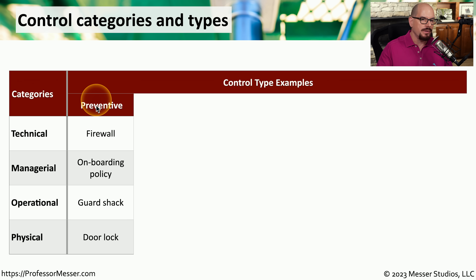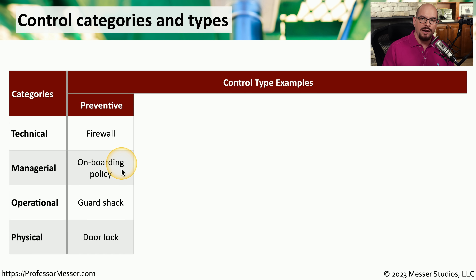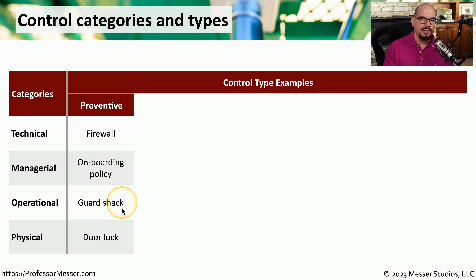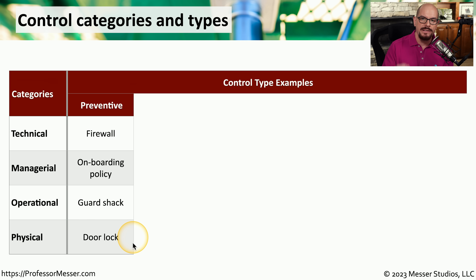When we deal with preventive control types, we can look at firewall rules. Since those are handled at a technical level, they fit into the technical category. As we hire people, we may want to set a certain type of policy for onboarding, and those would be policies set as part of the managerial category. We've already mentioned a guard shack checking everyone's identification — since that's done by a person, we can fit that into the operational category. And lastly, door locks are physical devices preventing access to a room, so that fits into the physical category.